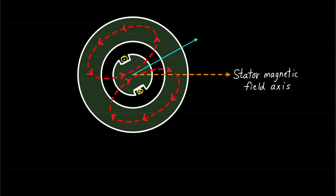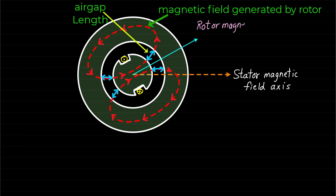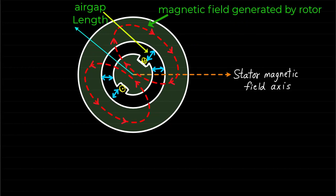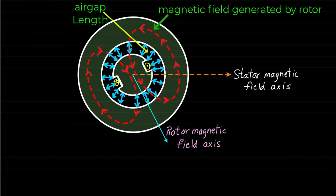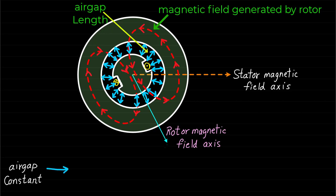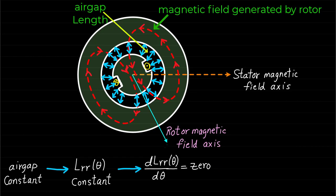Now let's remove the stator coil to investigate the rotor self-inductance. It is very clear that the air gap length seen by the magnetic field generated by the rotor excitation does not change with respect to rotor position. Basically, even though the rotor magnetic field is rotating with the rotor, the rotor magnetic field path will see the same air gap length at any rotor position. Since the air gap does not change with respect to the rotor position, the rotor self-inductance LRR of theta will be constant. Therefore, the rate of change of the rotor self-inductance will be zero.